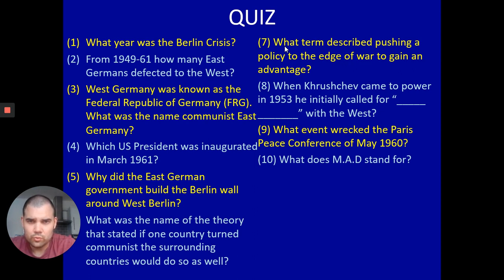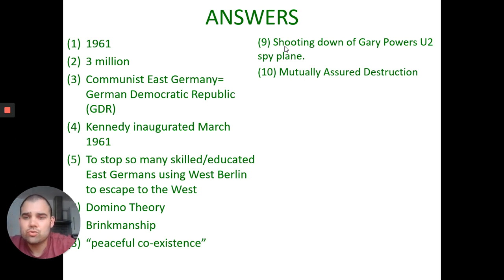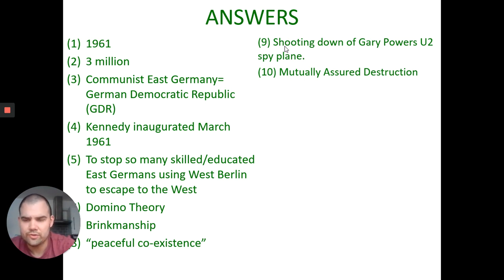Hopefully you had a go at all 10 of those. Just going through the answers very quickly — see what you managed to get. Question one: the Berlin Crisis was in 1961. The Berlin blockade and airlift was 1948 to 1949; the Berlin Crisis refers to the building of the Berlin Wall in 1961. Three million East German defectors left East Germany using West Berlin to escape to the West from 1949 to 1961. The name of East Germany was the German Democratic Republic, or GDR.